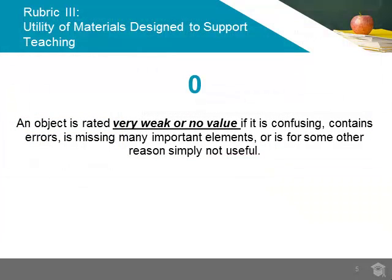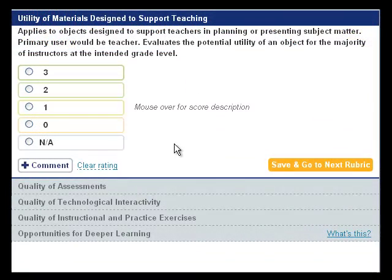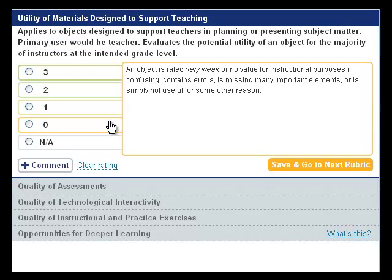If an object is intended to be used for teacher support, but is confusing, contains errors, is missing important elements, or for some other reason is simply not useful, then this object should be rated very weak or of no value, and given a 0 rating.